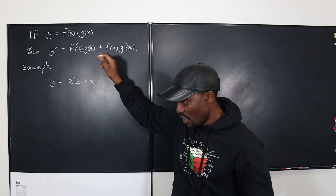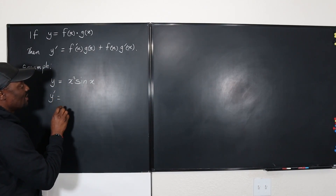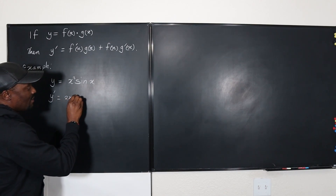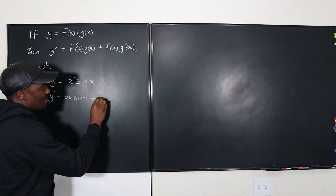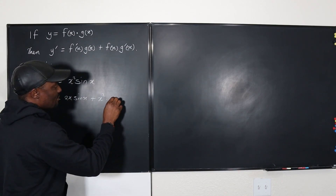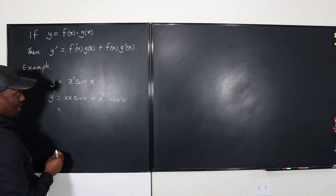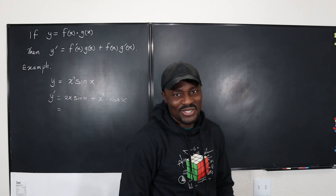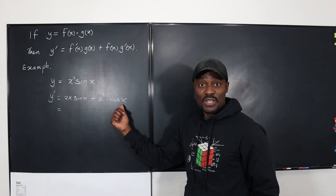we have to use the product rule. We have to say that y' is the derivative of the first multiplied by the second, plus you keep the first and you multiply by the derivative of the second. So that's your answer — it doesn't look as nice as you would expect, but that's what you get.